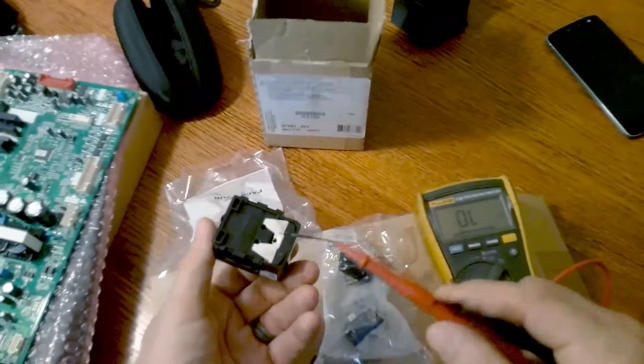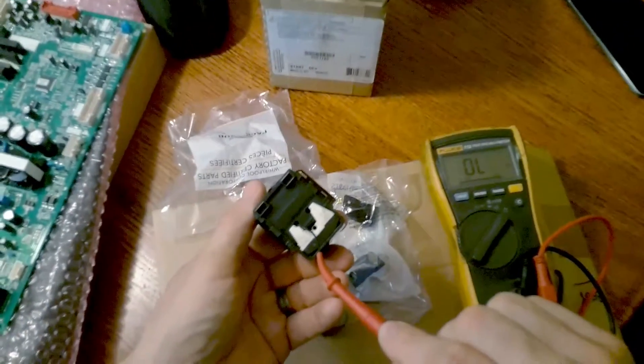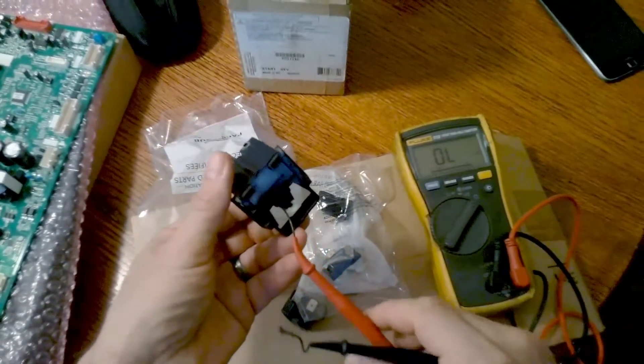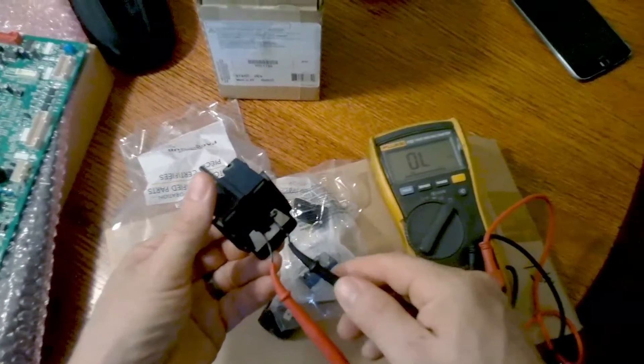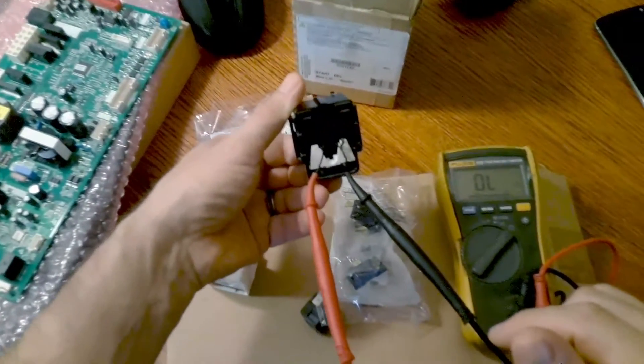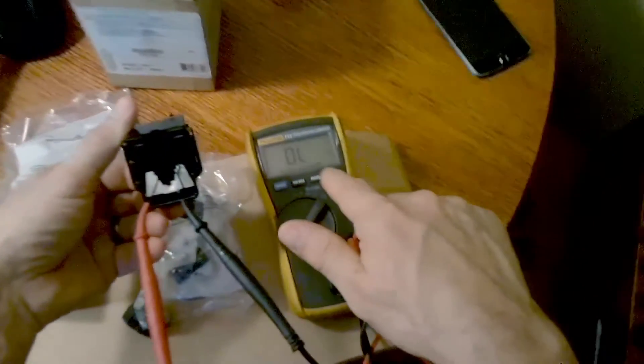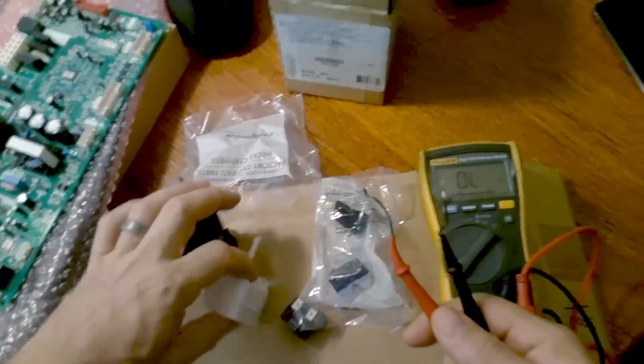So this is a bad relay. This is one I replaced, but this is a bad one so it's a great example. Place your red and your black prong in these two holes and you should read like 0.4. As you can see here, it's open line, so that's a bad relay.